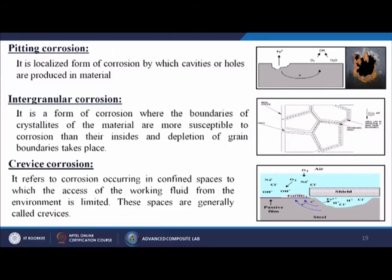Intergranular corrosion is a form of corrosion where the boundaries of crystallites of the material are more susceptible to corrosion than their insides, and depletion of the grain boundaries takes place.